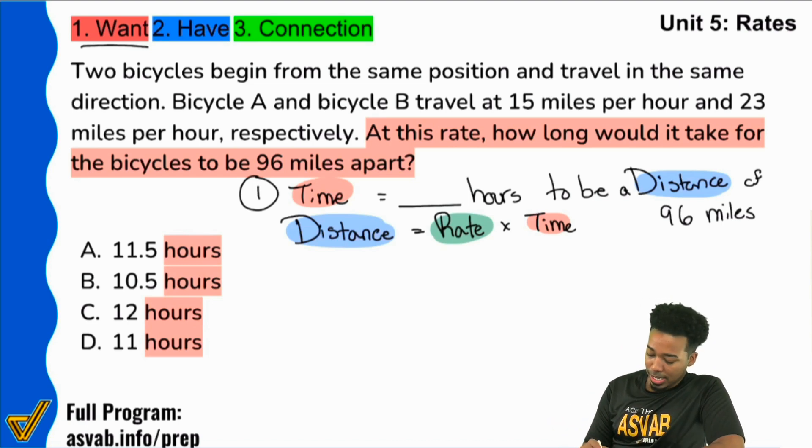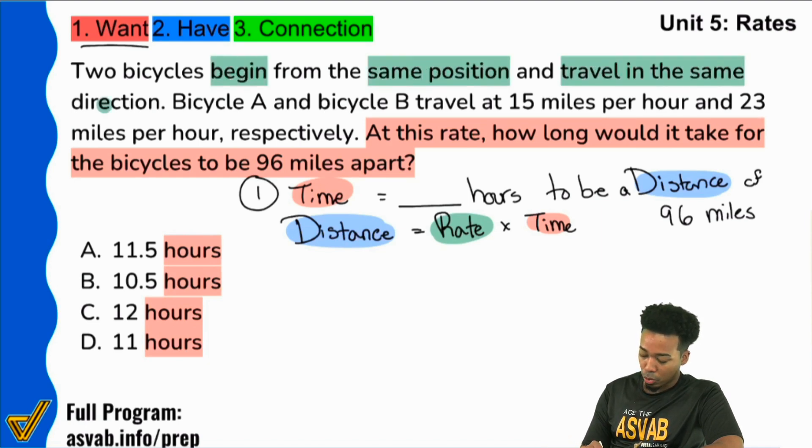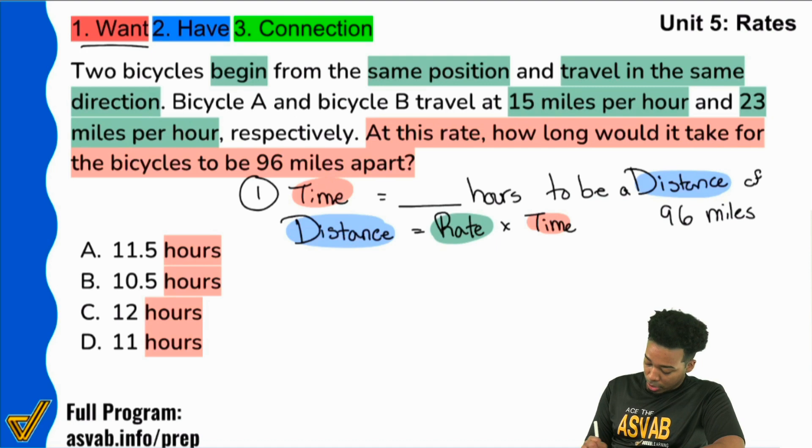Really, with all word problems, it's not about what the numbers are, it's what the numbers mean. It says that two bicycles begin from the same position and travel in the same direction. Bicycle A and bicycle B travel at 15 miles per hour and 23 miles per hour, respectively. What you may not have noticed is at the beginning of the problem, the first sentence gives away a very important piece of information: they start from the same position and travel in the same direction. That is the dead giveaway about what we're going to do with these rates: 15 miles per hour and 23 miles per hour.